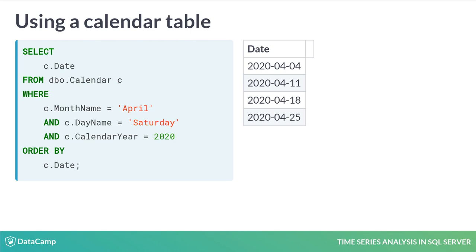If we have that holiday in our calendar table, we can write a query to learn that Easter is on April 12, 2020. Therefore, we do not want to schedule our event for the 11th. We still have three good dates.